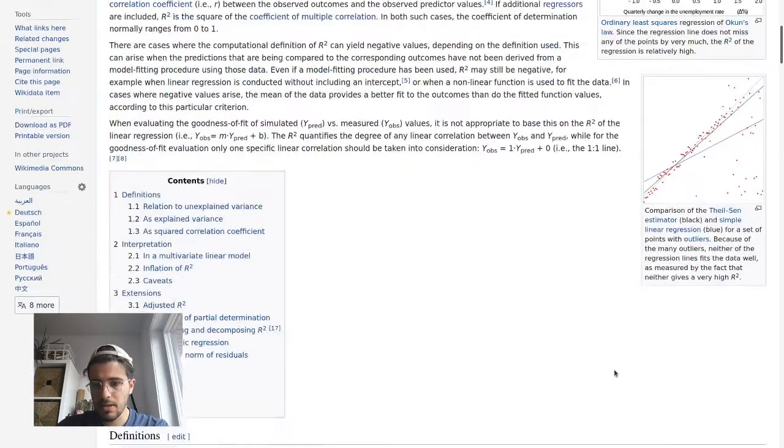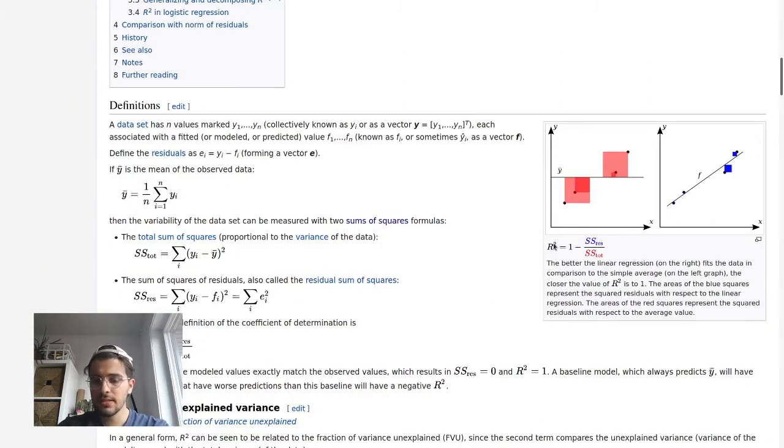So for instance, in ordinary least squares, you're going to see this formula come up a lot. The formula is 1 minus sum of square residual divided by sum of square total. The sum of square residual is the actual value minus your predicted value, exponent 2, and you sum this up.